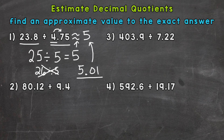I'm going to show two different strategies for number two, starting with the same one we used for number one. We look at the divisor first and round it to the nearest whole number. 9.4 rounds to 9. Then I need to find a compatible number close to my dividend, 80.12. I can think: 81 is a compatible number with 9, and 81 divided by 9 gives us our first estimate of 9.